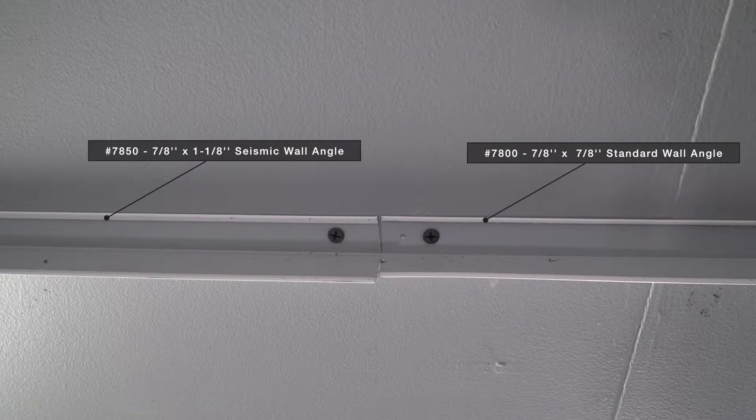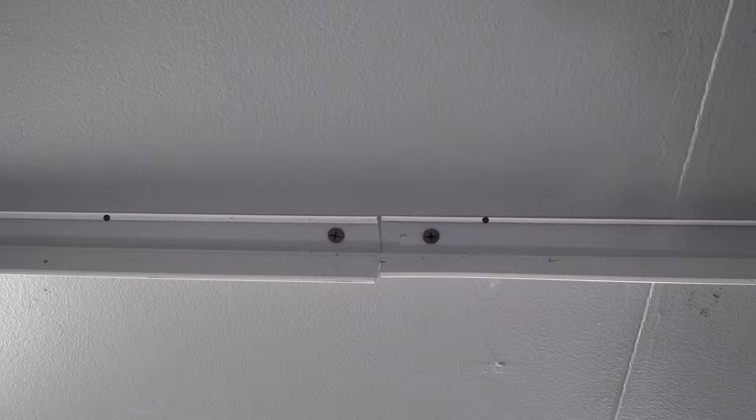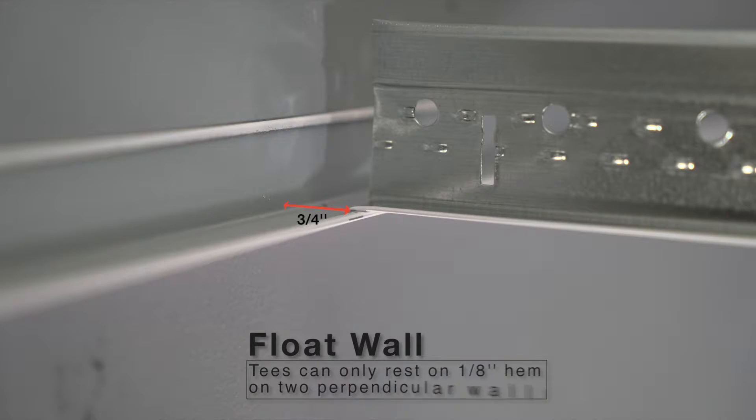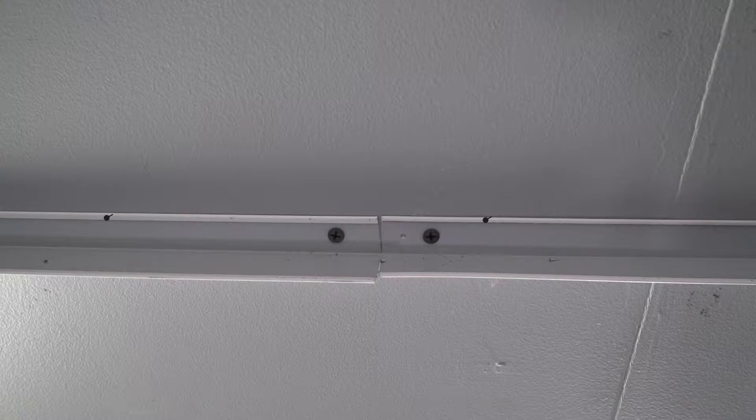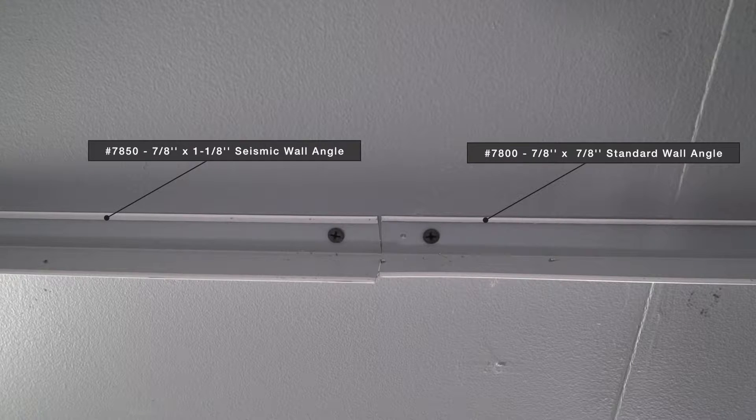Item 7850 is Armstrong's new Seismic Wall Angle that's sized 7/8 of an inch by 1-1/8 inch. To meet code and allow for 3-quarter inch tee movement on 7/8 inch molding, your tee can only sit on the 1/8 inch flange, leaving 3-quarter inch tee movement on your two float walls. With 7850, we're giving you an extra quarter inch for your tee to lay on float walls while still meeting code.